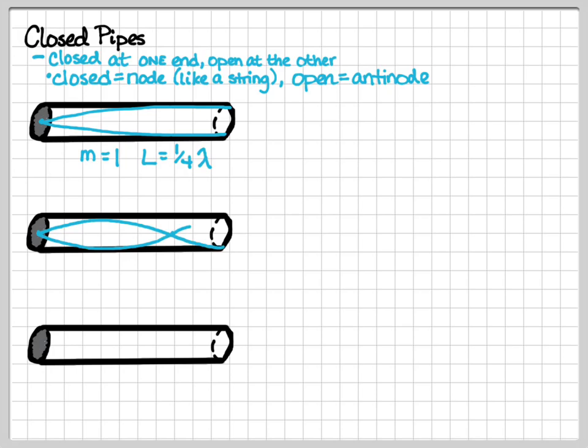Our next harmonic looks kind of like a fish. It's not very symmetric, and so we've got half a wavelength from node to node, and then it goes from node to antinode. That's a quarter of a wavelength. We have three-fourths of a wavelength within this pipe. So be careful, because this is actually the third harmonic.